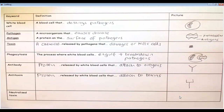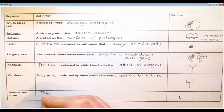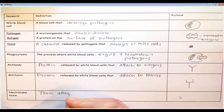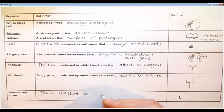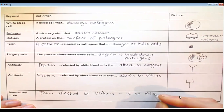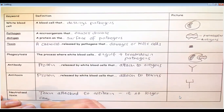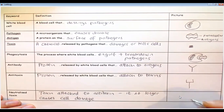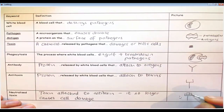Our last definition is a neutralized toxin — that's a toxin attached to an antitoxin, and it no longer causes cell damage. The picture shows the antitoxin with the toxin sat inside it.